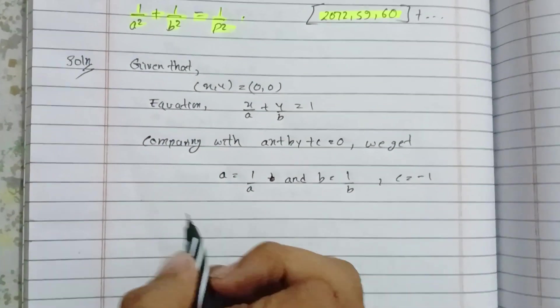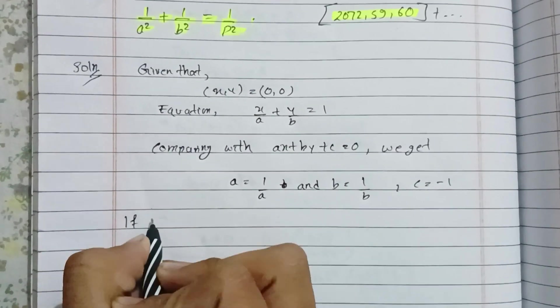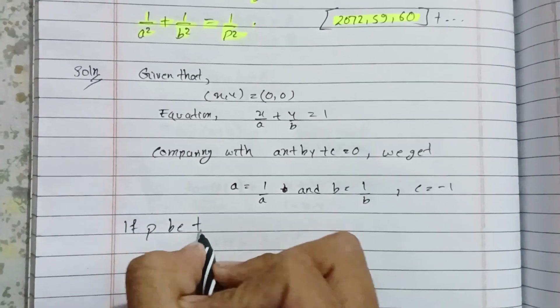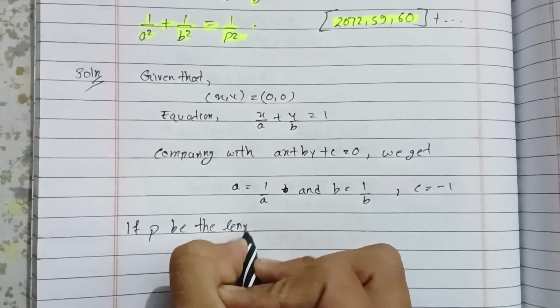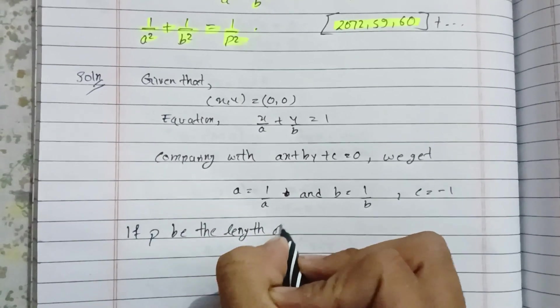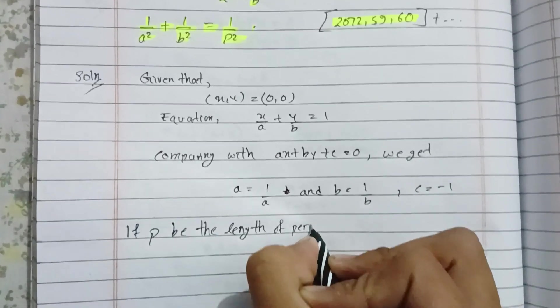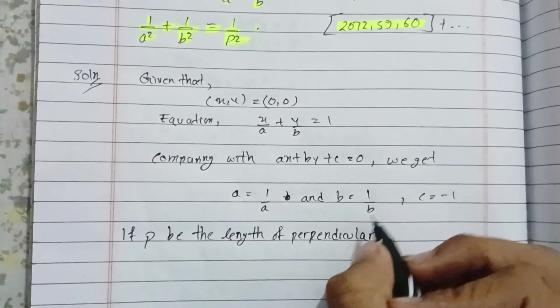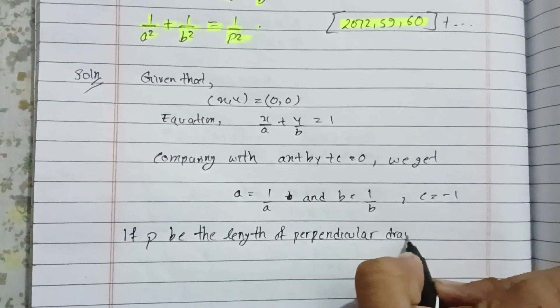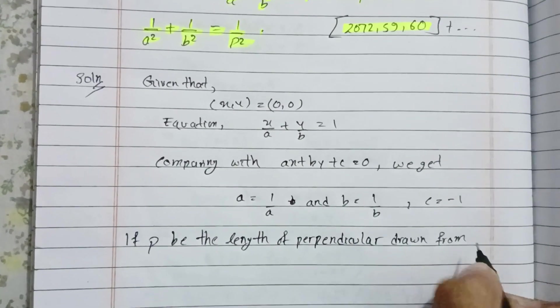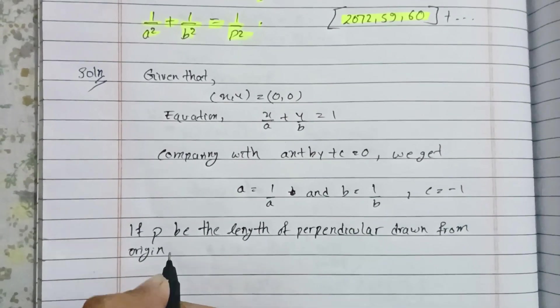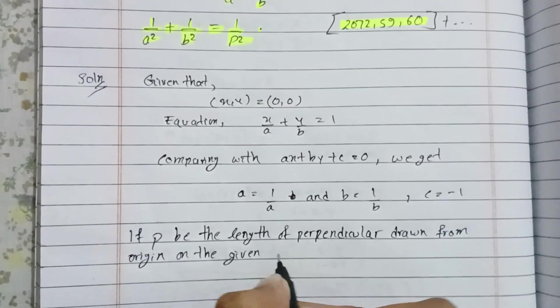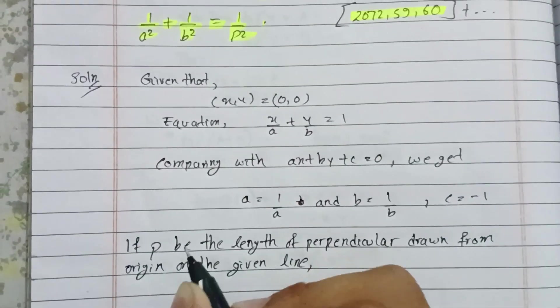If p is the length of perpendicular drawn from origin on the given line, then we use the equation.